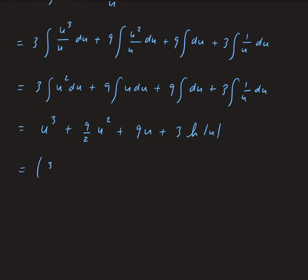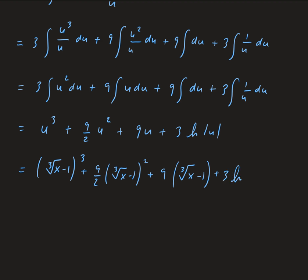So our final answer is: (cube root of x minus 1) cubed, plus 9/2 times (cube root of x minus 1) squared, plus 9 times (cube root of x minus 1), plus 3 times the natural log of the absolute value of cube root of x minus 1.